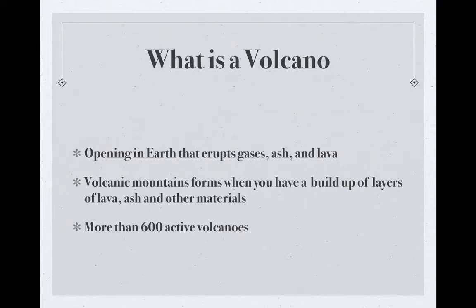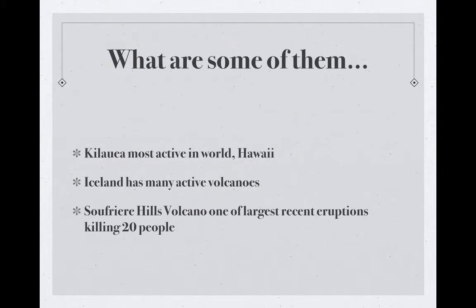There are over 600 active volcanoes in the world now. Where are some of them? We have the most active volcano in the world in Hawaii — Kilauea. In Iceland we have many active volcanoes. When we do our map activity, you'll notice that Iceland falls right in the middle of the Atlantic, where we have a mid-Atlantic ridge, and there are all kinds of volcanoes in that area.